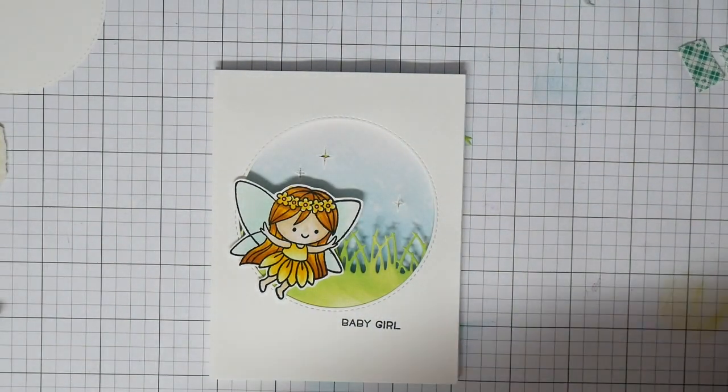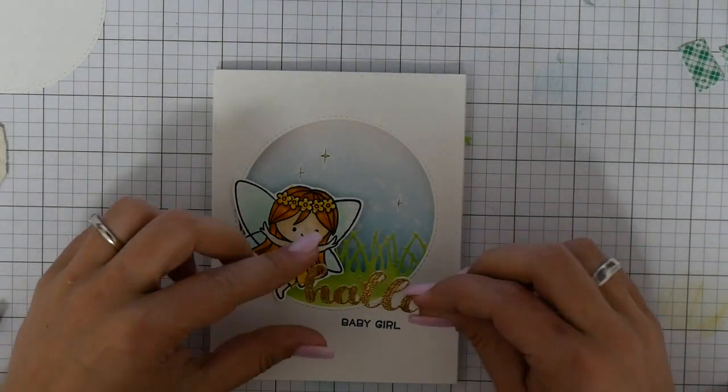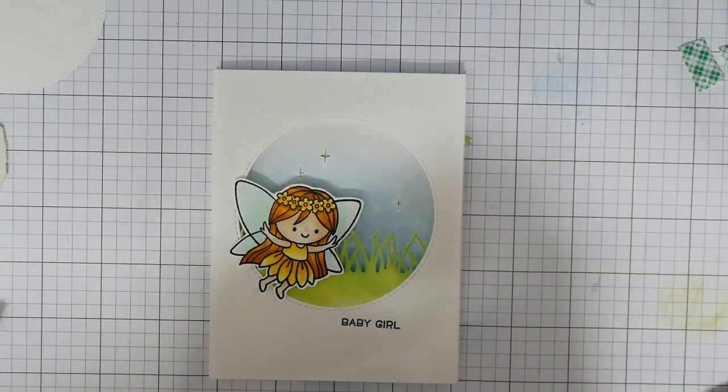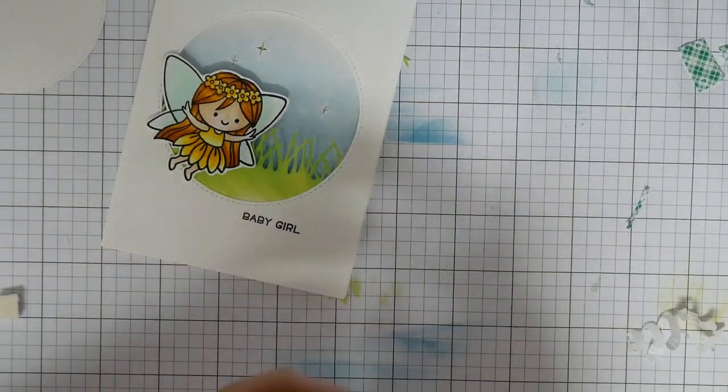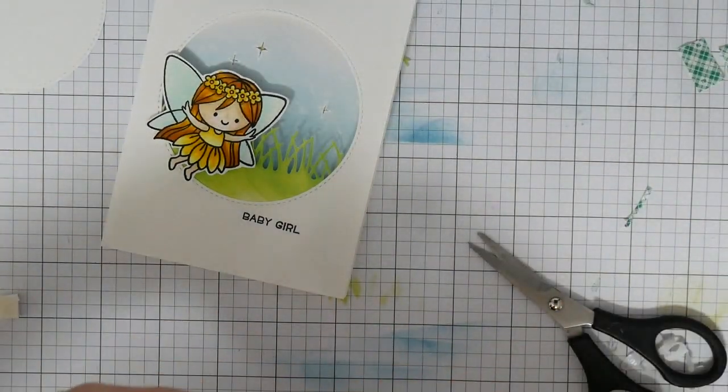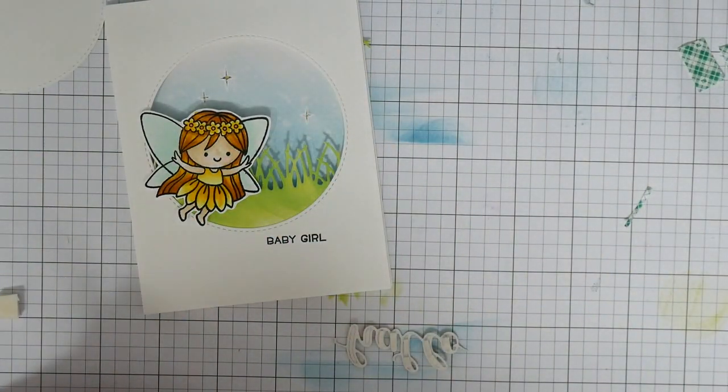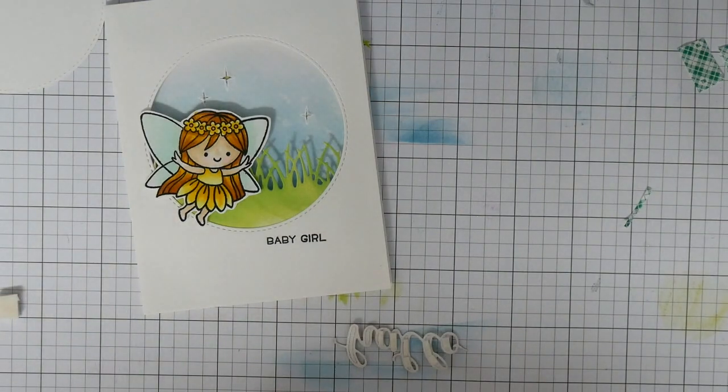I have the opportunity to change it. I'm using for my fairy three layers of foam tape on the wings and on the belly. I'm using just one layer of foam tape so everything is on the same height.